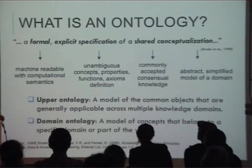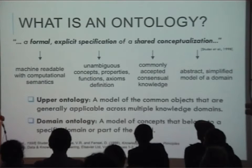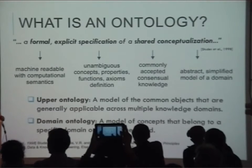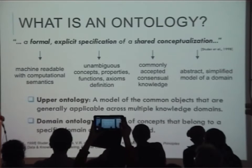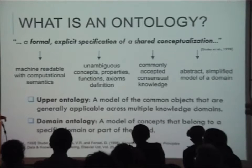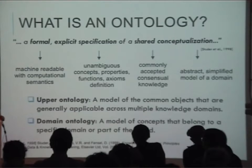Within computer and information science, an ontology is a formal machine-readable vocabulary that defines the entities that exist in a domain, providing a simplified conceptual model of a domain. Pericles uses both an upper-level ontology — referred to as the linked resource model — which is a model of common objects generally applicable across multiple knowledge domains, as well as multiple domain ontologies, which are models of concepts belonging to specific knowledge domains.